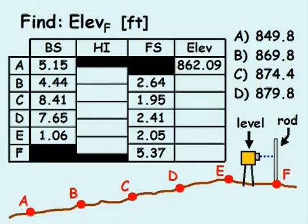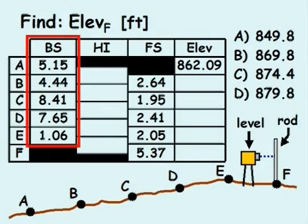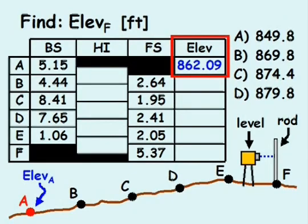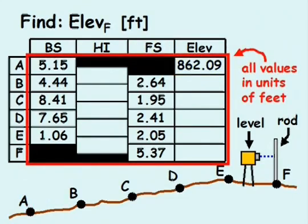In this problem, points A through F are positioned along an open traverse. Survey data is provided, which includes the backsight readings, the foresight readings, and the elevation at point A. All length values in the data table are in units of feet.